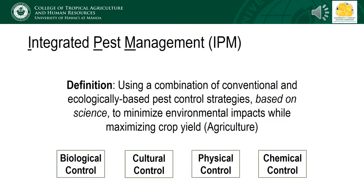Fortunately, there are integrated strategies anyone can adopt to minimize chemical use and non-target impacts to beneficial organisms. Integrated pest management, or IPM, is defined as using a combination of conventional and ecologically based pest control strategies based on science to minimize environmental impacts while maximizing crop yields. This definition is agriculture-centric, but IPM can be applied to a number of circumstances, for example, controlling pests in your home. There are four major categories of pest control strategies: biological, cultural, physical, and chemical control.